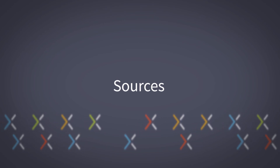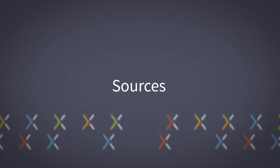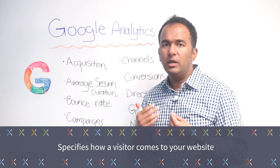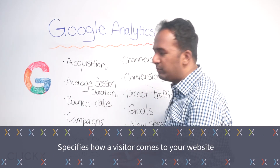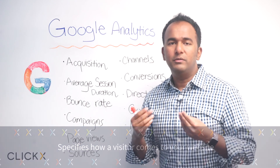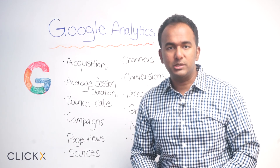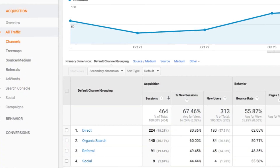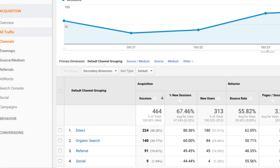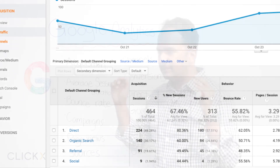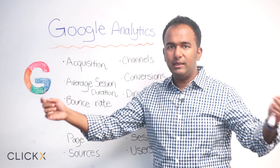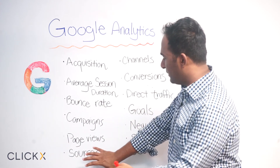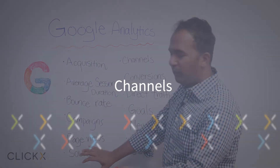Sources specifies how a visitor comes to your website. Search engines are a great source of traffic. Direct traffic — people that just punched in www.domain.com — is a source. Referral is a source: anybody that has a link on their website, when someone clicks that link and comes to your website, it's a referral. Social media is also a source. So sources is just where the traffic is coming from.